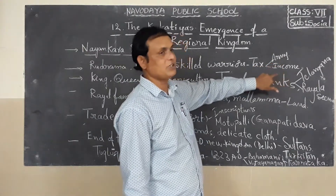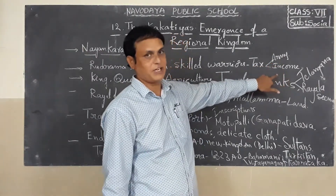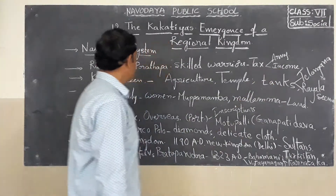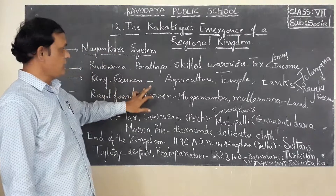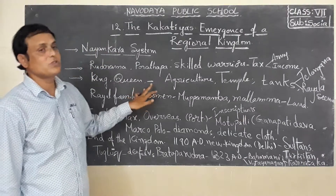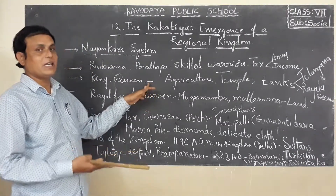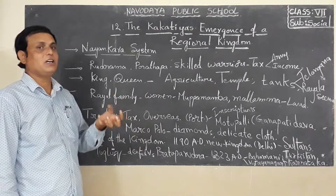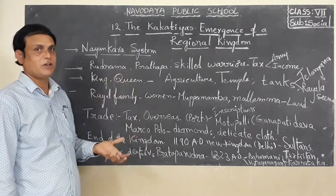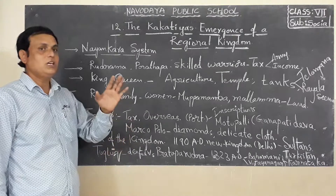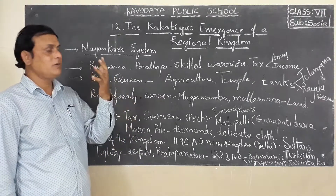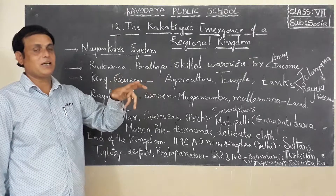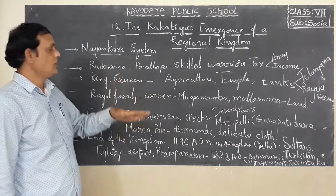Tax was the main income of the kingdom. Sometimes those under the king and queen would rebel against them. But Rudramadevi and Prataparudra cleverly suppressed and subdued them.